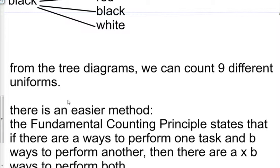But there is an easier method. It's called the Fundamental Counting Principle, and it states that if there are A ways to perform one task and B ways to perform another task, then there are A times B ways to perform both.